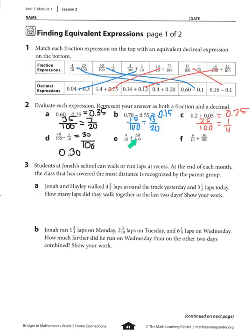Part e: 4 tenths plus 60 hundredths. I know that 4 tenths is the same as 40 hundredths, so 40 hundredths plus 60 hundredths equals 100 hundredths. And yes, that also equals 1. So as a decimal it would just be 1.